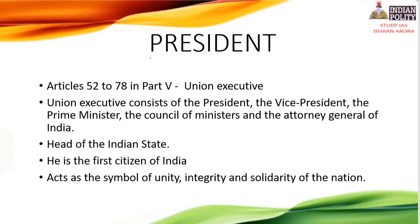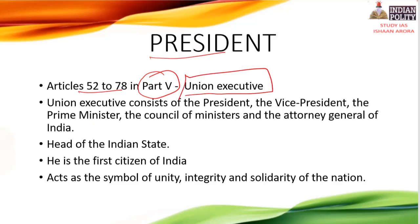Before we know about the President, Article 50 deals with the Union Executive. Union means Central Government. In Part 5, Articles 52-78 cover the Union Executive, which includes the President, Vice President, Prime Minister, Council of Ministers, and the Attorney General of India.